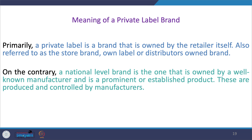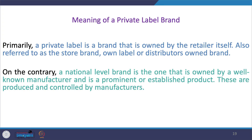One more concept to preview before we enter week four: the private label brand. A private label brand is a brand owned by the retailer itself — also called a store brand, own label, or distributor's own brand — meaning it is manufactured by the retailer, not a national-level brand. National-level brands are owned by well-established manufacturers. Private labels are produced and controlled by the retailer, and have their own importance in retail establishments. We'll be discussing private labels and the many myths associated with them in much greater detail in week four.